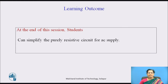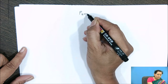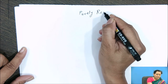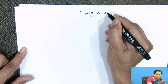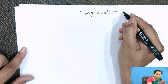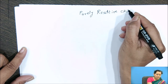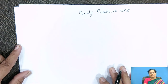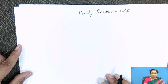At the end of this session, students will be able to simplify the purely resistive circuit for AC supply. A purely resistive circuit means only resistance is connected to the AC supply.